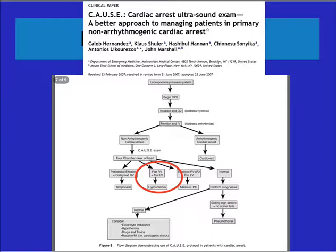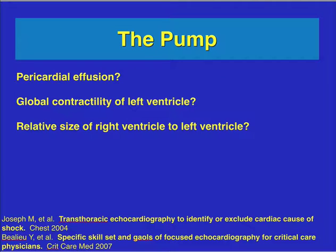This is one of the algorithms used; at some point you start looking at the LV for relative RV to LV size, LV for hypovolemia and function. When talking about the pump, you can look for pericardial effusion (covered in another lecture). In this lecture, we focus on global contractility of the left ventricle. In the right ventricle lecture, we'll cover relative size of the RV to the LV.